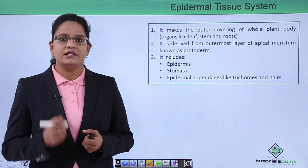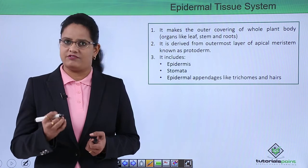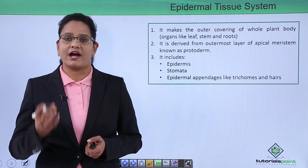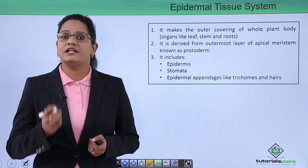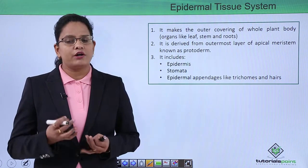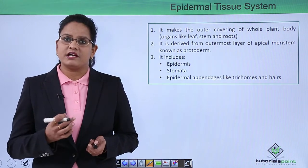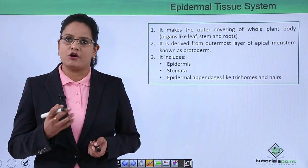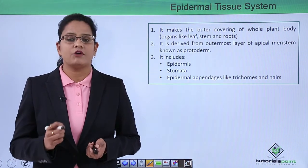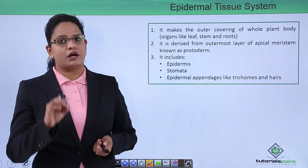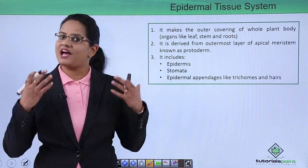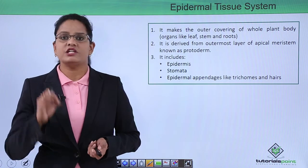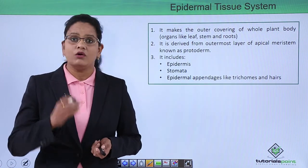Just the way we have skin in our body — skin is the first line of defense, the largest organ, and its major role is to protect our body from external factors such as extremes of temperature, infectious bacteria, and different types of organisms. It also protects us from excess loss of water. Similarly, the dermal tissue system performs these functions in the plant body, covering the stem, leaf, and root.